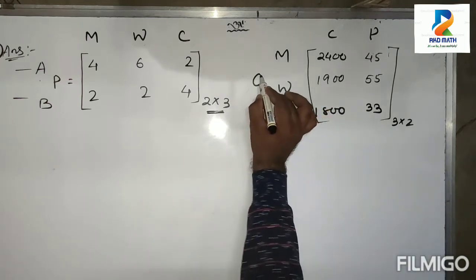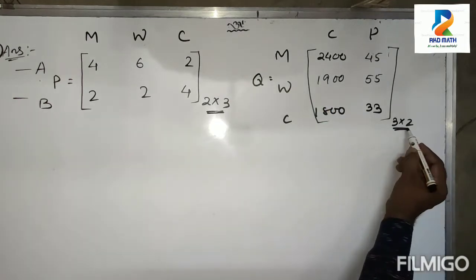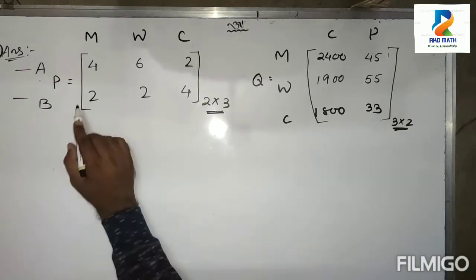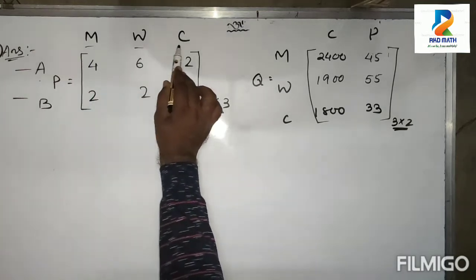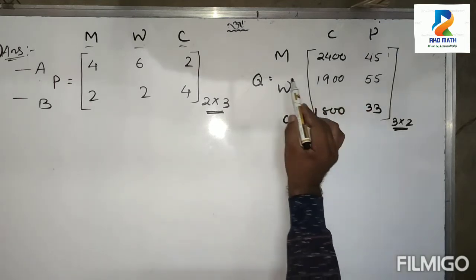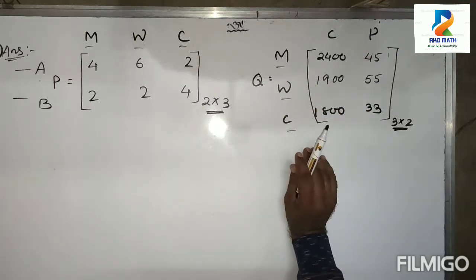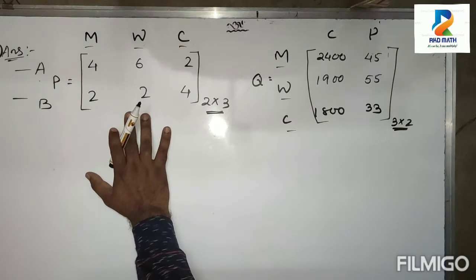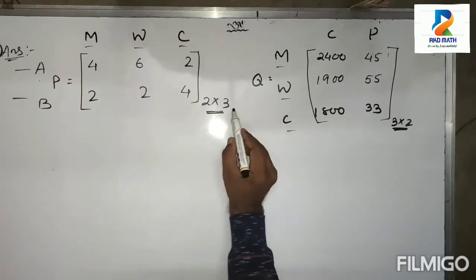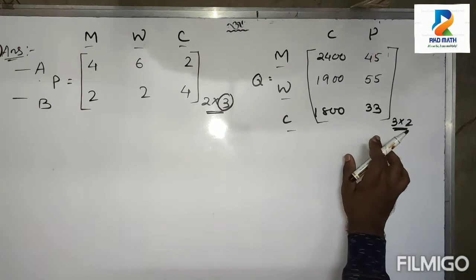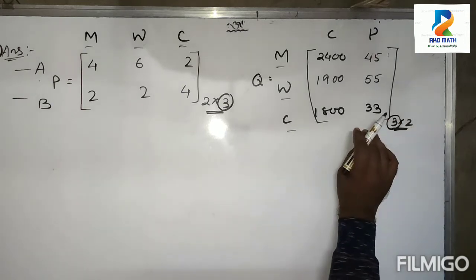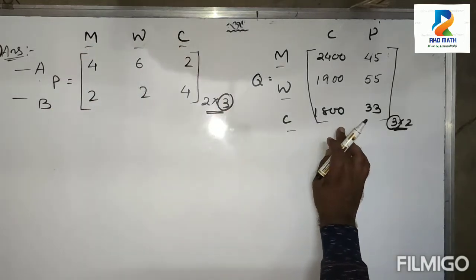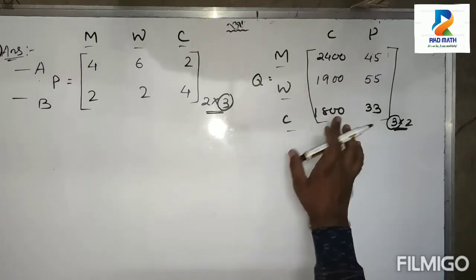Now listen — why do we take the first matrix as 2×3 and the second matrix Q as 3×2? Because in the first matrix the columns are men, women, and children; in the second matrix the rows are men, women, and children. We know that to multiply two matrices, the number of columns in the first matrix must equal the number of rows in the second matrix. That's why we take men, women, and children as three in the first matrix and in row-wise in the second matrix.